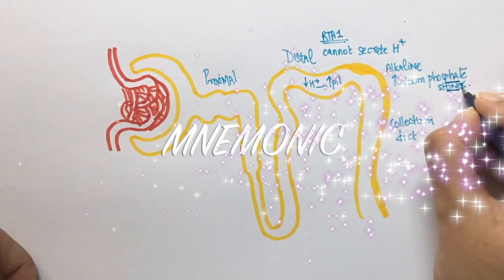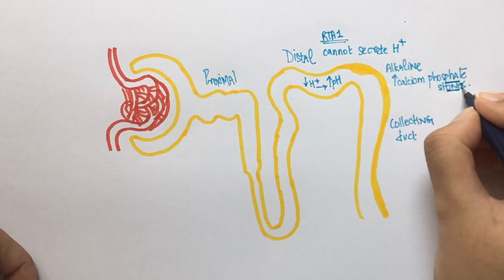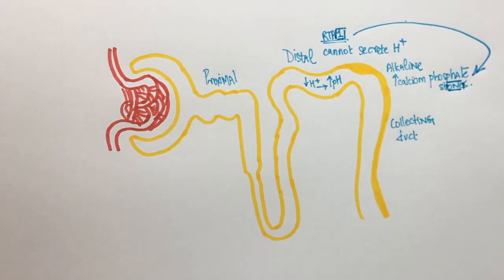I remember this by the letters O-N-E in stones. This reminds me that stones are associated with RTA type 1.